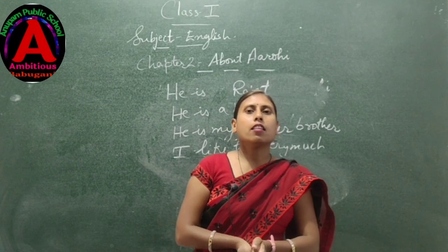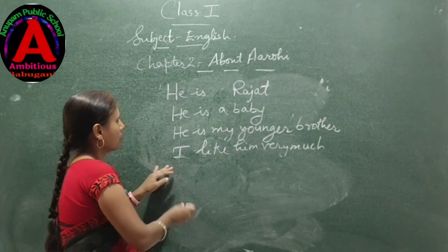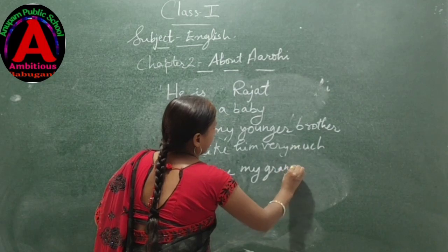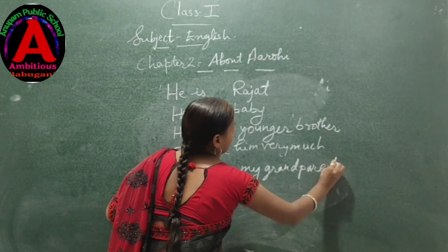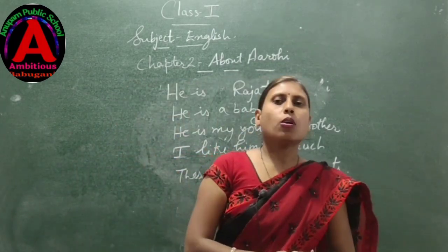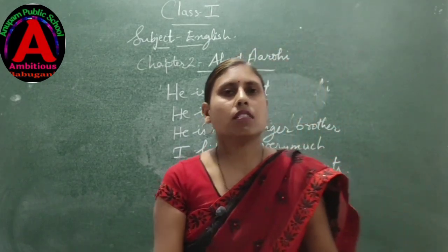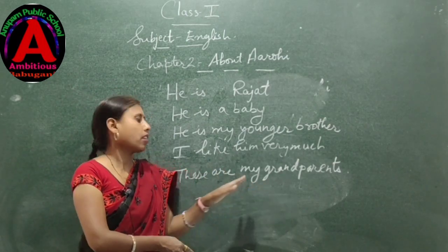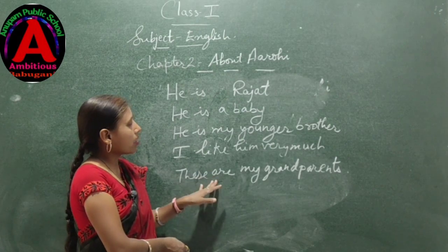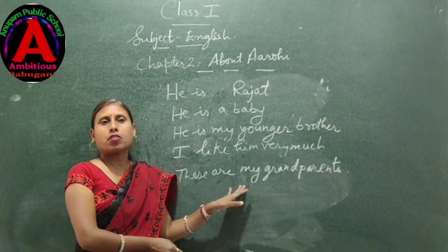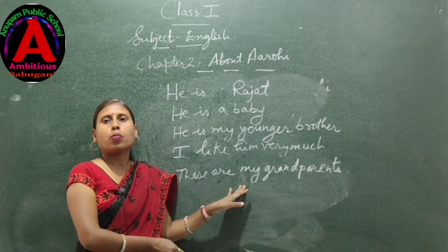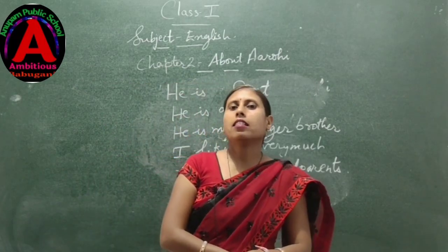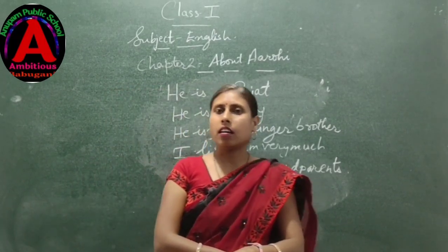Now the last stanza: These are my grandparents. They play with me and they love me very much. So Arohi is introducing her grandparents. Her grandparents play with her and love her very much.